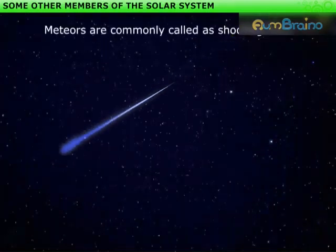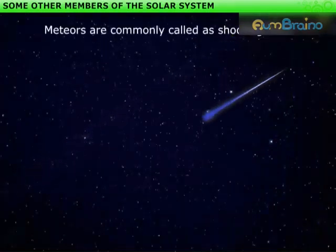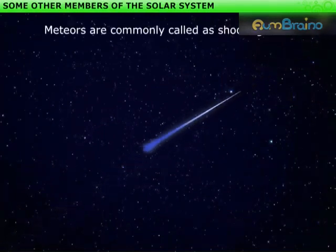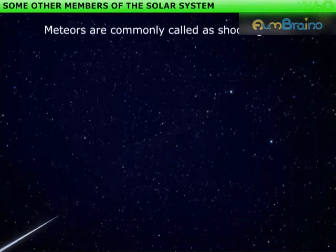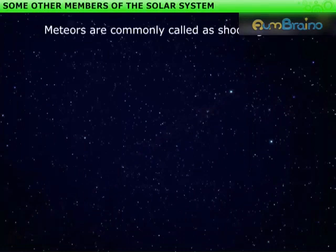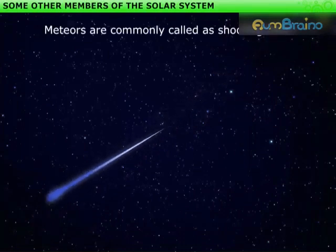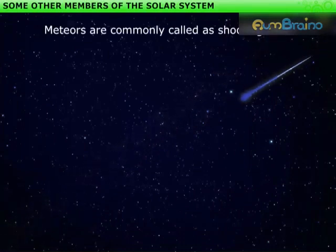Meteors are commonly called shooting stars, though they are not stars. A meteor is usually a small object that occasionally enters the Earth's atmosphere. As it enters the Earth's atmosphere, it gets heated due to friction, so it glows and evaporates.